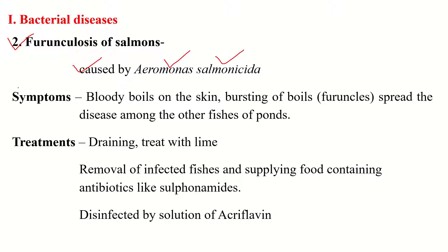The disease is characterized by the appearance of bloody boils on the skin and almost all the visceral organs of the fish. When such boils burst, the material spreads in the water body, spreading the disease among other fishes in the pond.